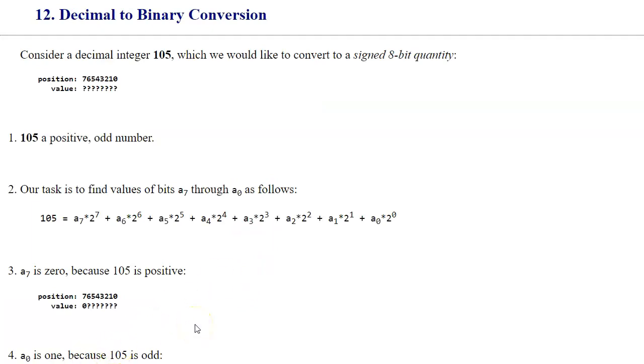In the reverse conversion, we need to take a decimal value and convert it to a two's complement representation. Here, on the slide, we have an example of a value 105, which we would like to convert to signed 8-bit quantity. In other words, two's complement representation of this value. 105 is a positive odd number. Our task is to find values of bits from a7 to a0, corresponding to their position. The rightmost bit has numeric position 0, and the leftmost position is position 7. And of course, the leftmost position is a sign bit, and because this number is positive, it will be a 0.